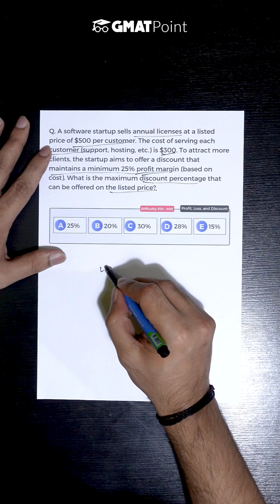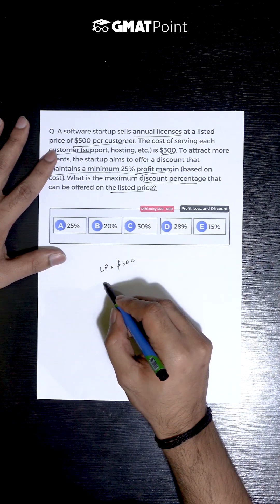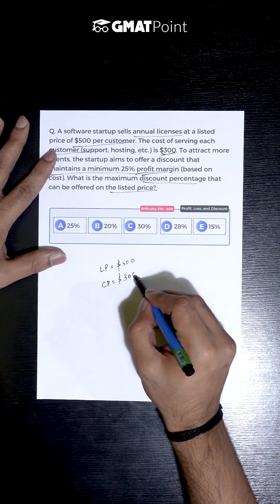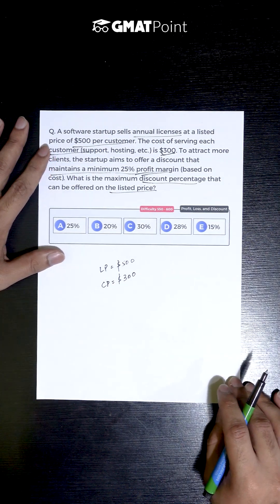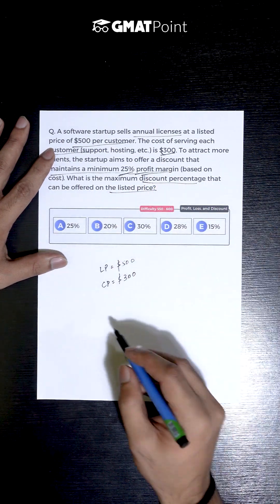The listed price is given to be $500 and the cost price incurred is given to be $300. Now, to maintain a minimum 25% profit margin, the selling price...